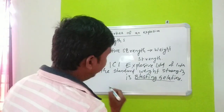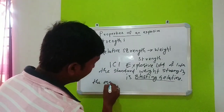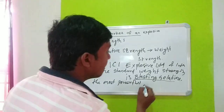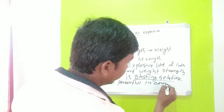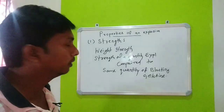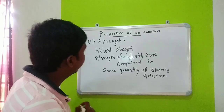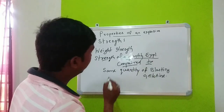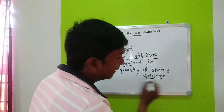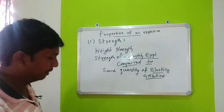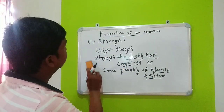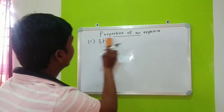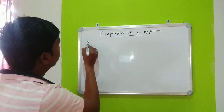Blasting gelatine is the most powerful explosive in commercial explosives. Weight strength means the strength of a quantity of explosive compared to the same quantity of blasting gelatine. We have now discussed strength, and next we will start about velocity of detonation.